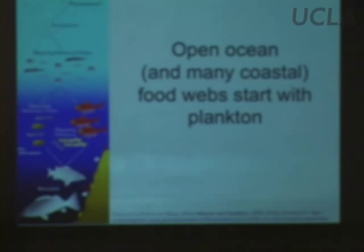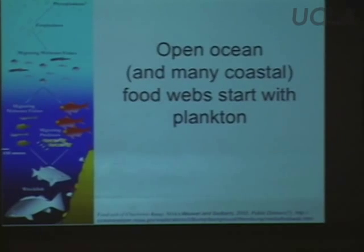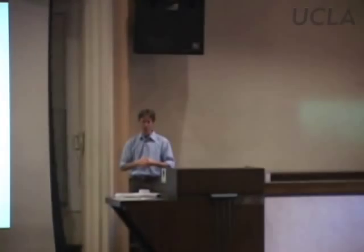Most plankton are organisms that are barely visible with the eye or even invisible. In some cases it is very difficult to see even in a microscope. In the open ocean, once the water depth gets beyond about a couple hundred meters, sunlight no longer penetrates to the bottom — at least not with enough intensity to support photosynthesis. So for most of the ocean, the whole food web is basically dependent on planktonic organisms that live up in the sunlit part of the ocean and can do photosynthesis.